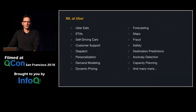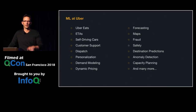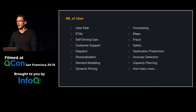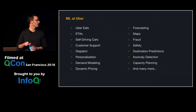There are over 100 ML use cases or problems being solved at Uber right now. This is a small sampling — you can see it cuts across the whole company: from Uber Eats, to self-driving cars, to customer support, pricing, forecasting, anomaly detection on system metrics, and even capacity planning for data centers to ensure adequate hardware for long-term needs and shorter-term spikes on big holidays like New Year's Eve and Halloween.